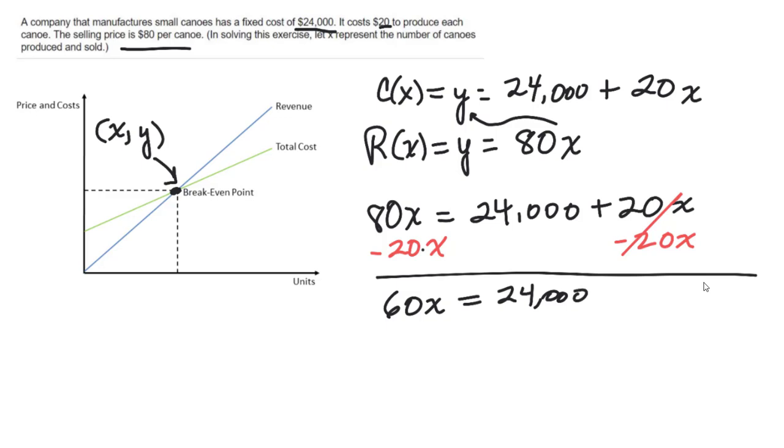I get x equals 400. So in other words, at 400 canoes, they make 400, manufacture 400 canoes, they're going to reach that break-even point.